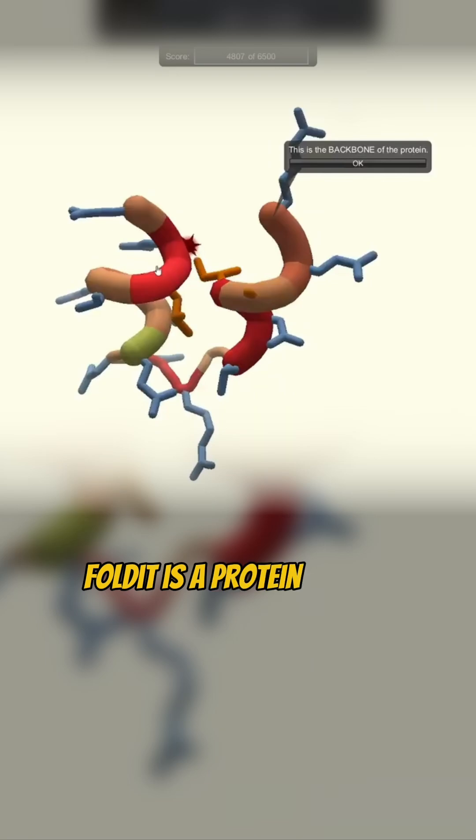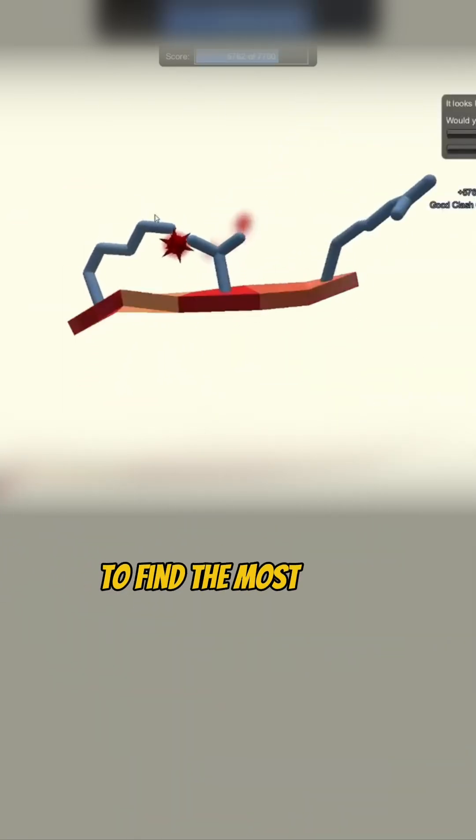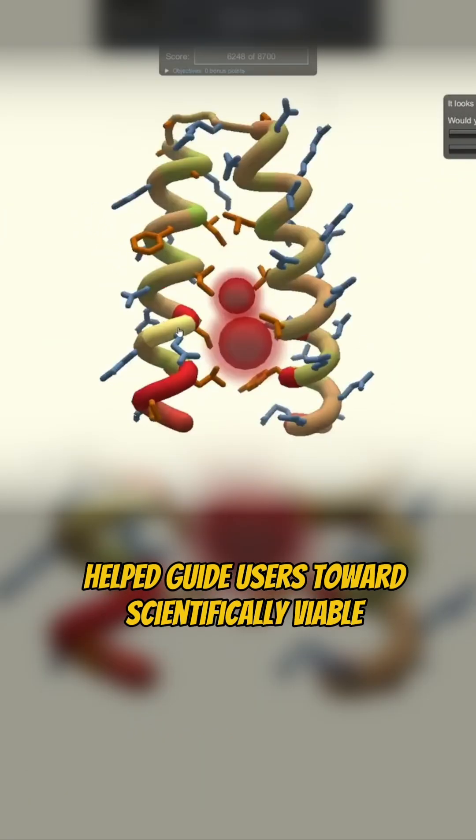Foldit is a protein folding game where players manipulate molecular shapes to find the most stable configurations. The game's scoring system helped guide users towards scientifically viable solutions.